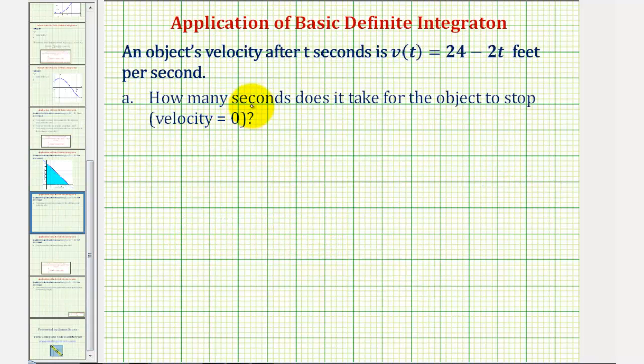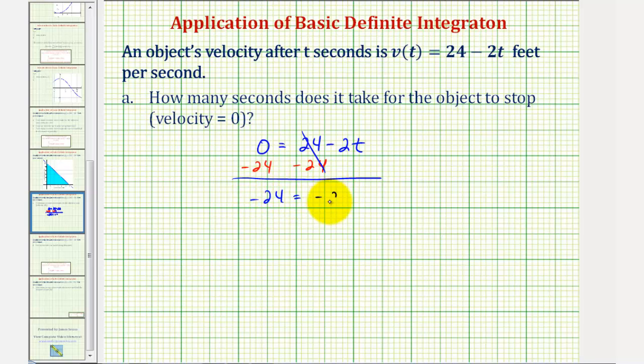So for part A, to determine when the object stops, we're going to set the velocity or v(t) equal to zero and solve for t. This gives us the equation 0 = 24 - 2t. To solve for t, we subtract 24 on both sides, so we have -24 = -2t.